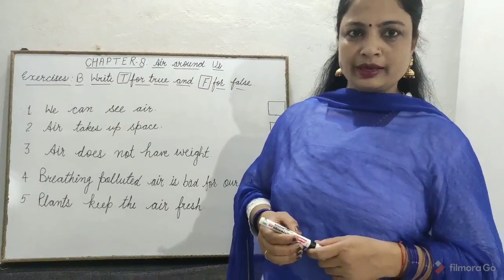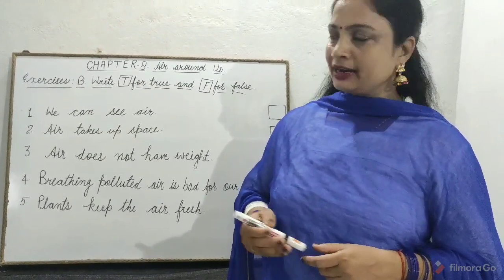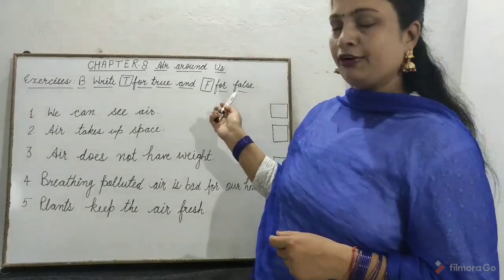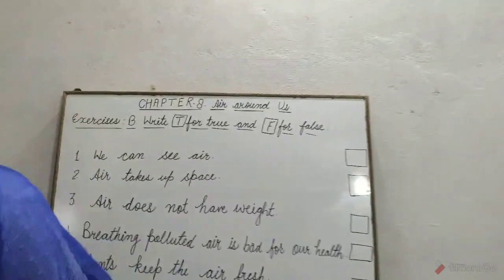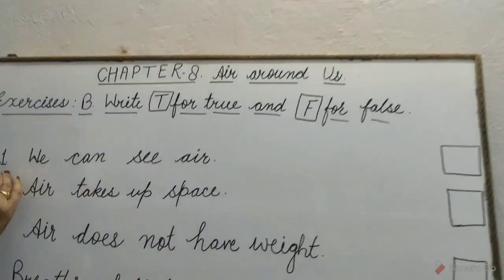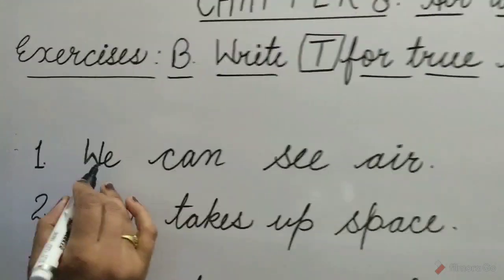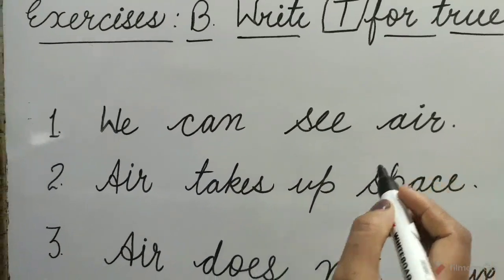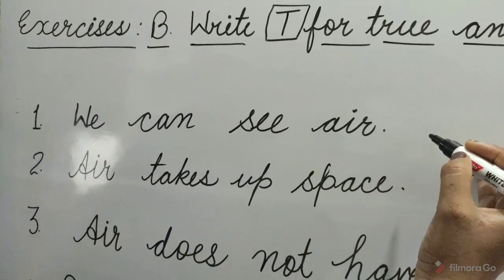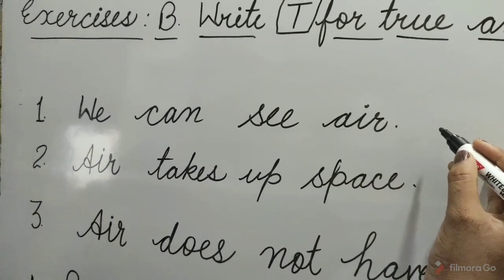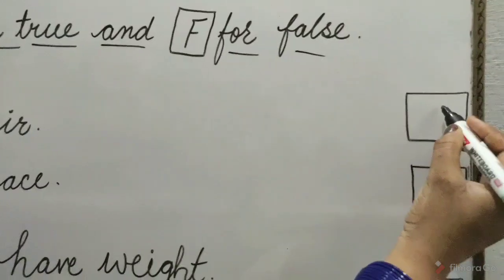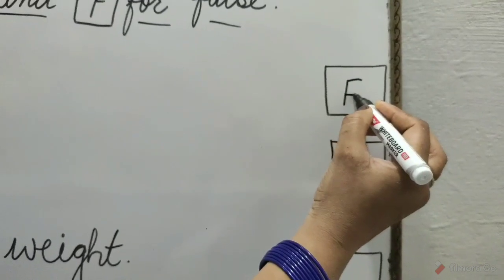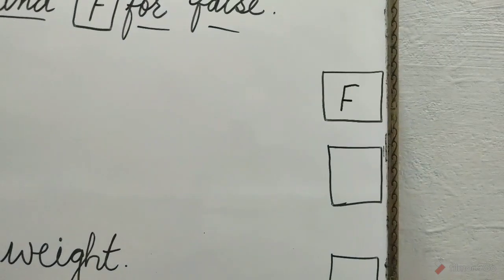Now let's solve Exercise B: Write T for true and F for false. Question 1: We can see air. No children, we cannot see air. So write here F for false.